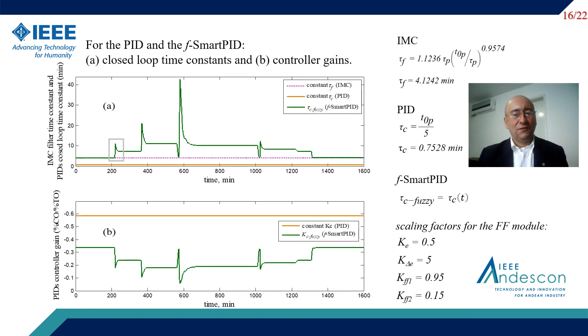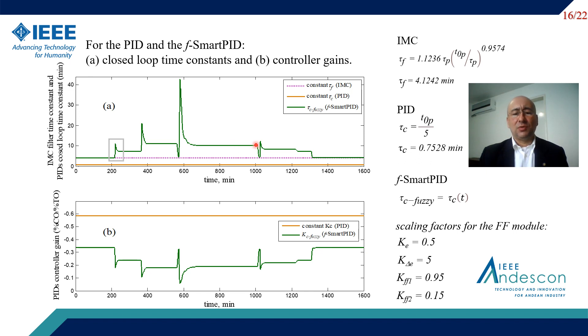On figure A, we can observe how the closed-loop time constant is varying in time for the whole set of process disturbances and set-point changes. This is the FOSSI closed-loop time constant.